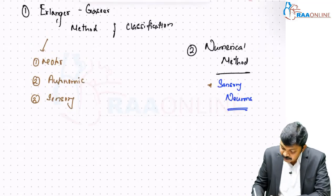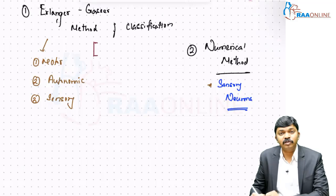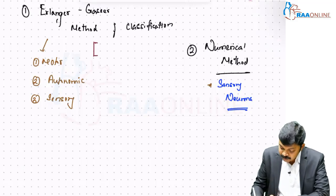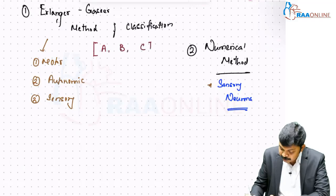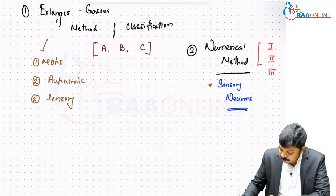At the outset, Erlanger-Gaser method of classification uses alphabetical letters. There is type A neuron, type B neuron, type C neurons, whereas numerical method uses numbers. It includes type 1, type 2, type 3 and type 4.